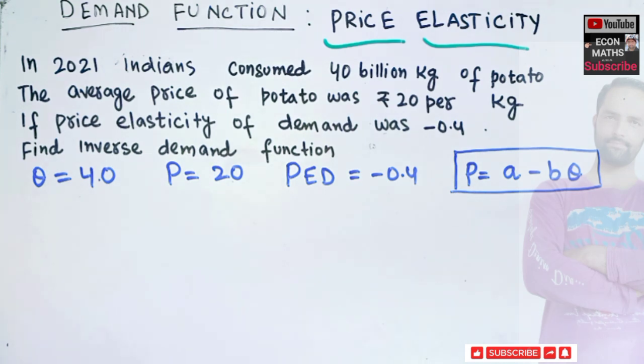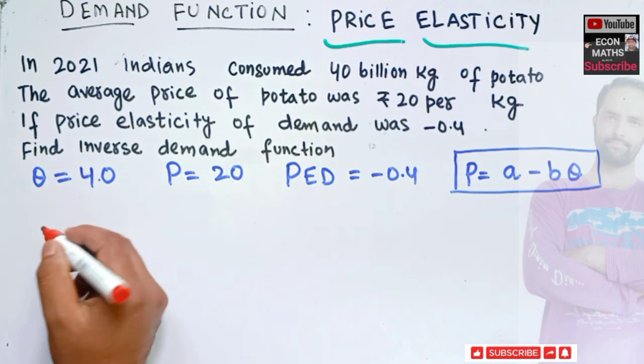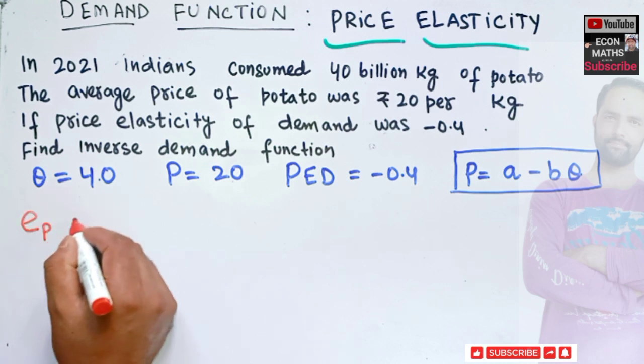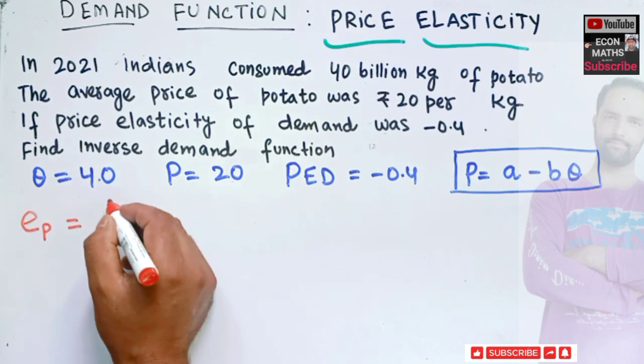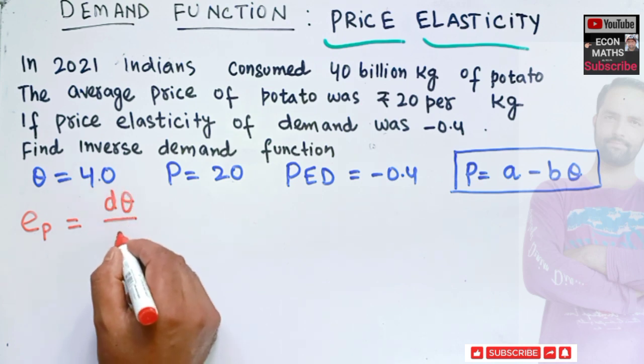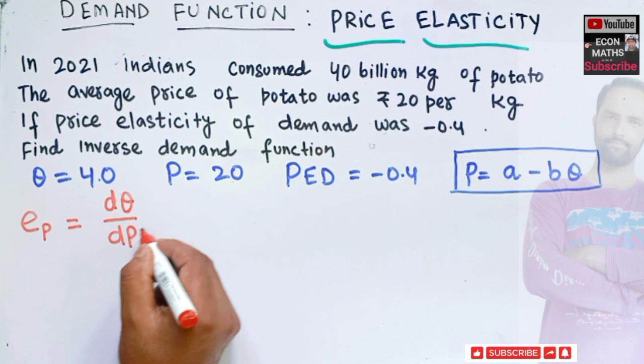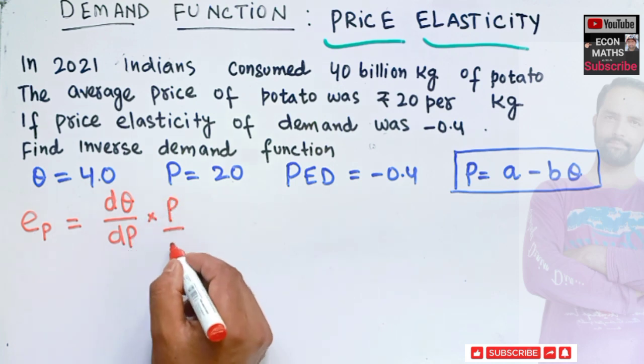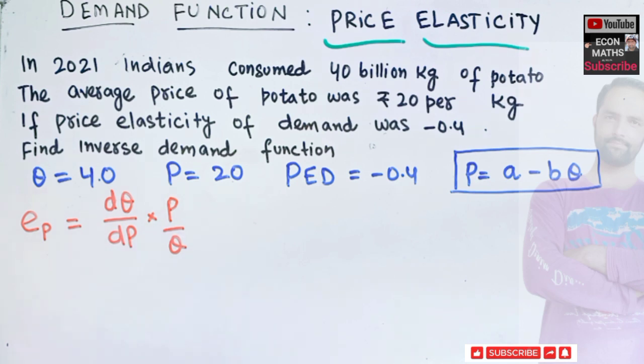So, what is the formula for price elasticity of demand? We know price elasticity of demand, let us denote it by EP. Price elasticity of demand is simply dQ upon dP into P upon Q. This is the price elasticity of demand formula.